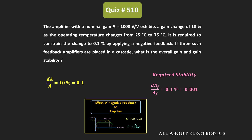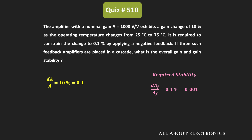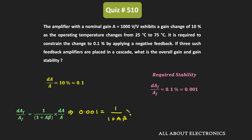In an earlier video on feedback amplifiers, we have seen that when we use negative feedback, the change in closed-loop gain dAF/AF = (1/(1+Aβ)) × (dA/A), where dA/A is the change in open-loop gain. So from this, 0.001 = (1/(1+Aβ)) × 0.1, which gives us 1+Aβ = 0.1/0.001 = 100.